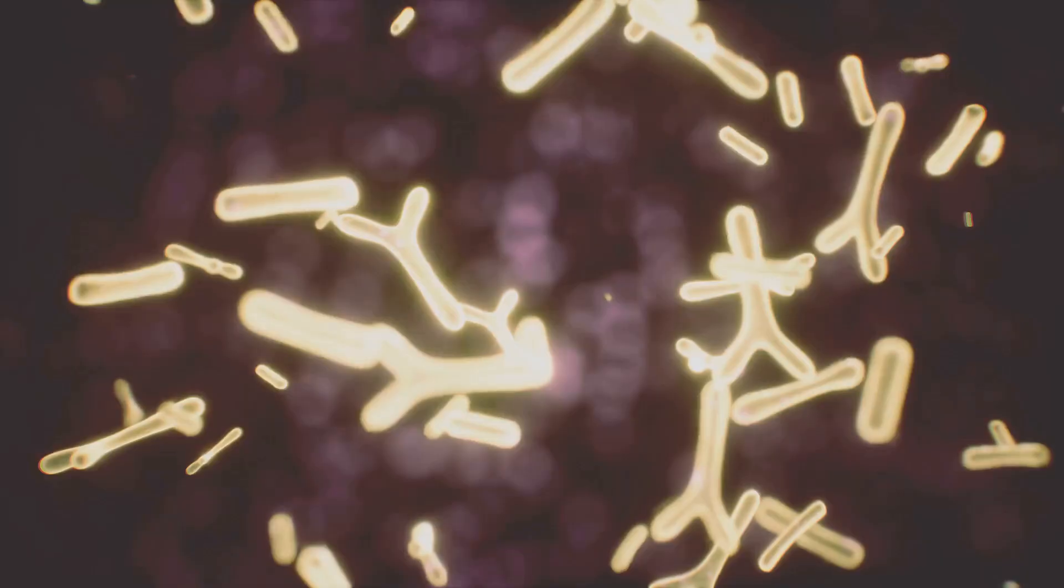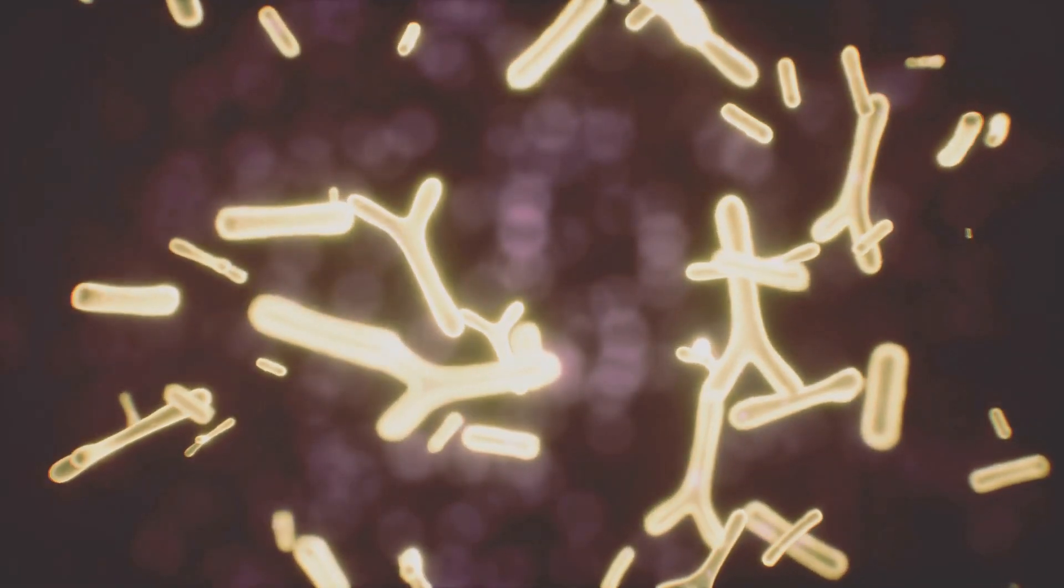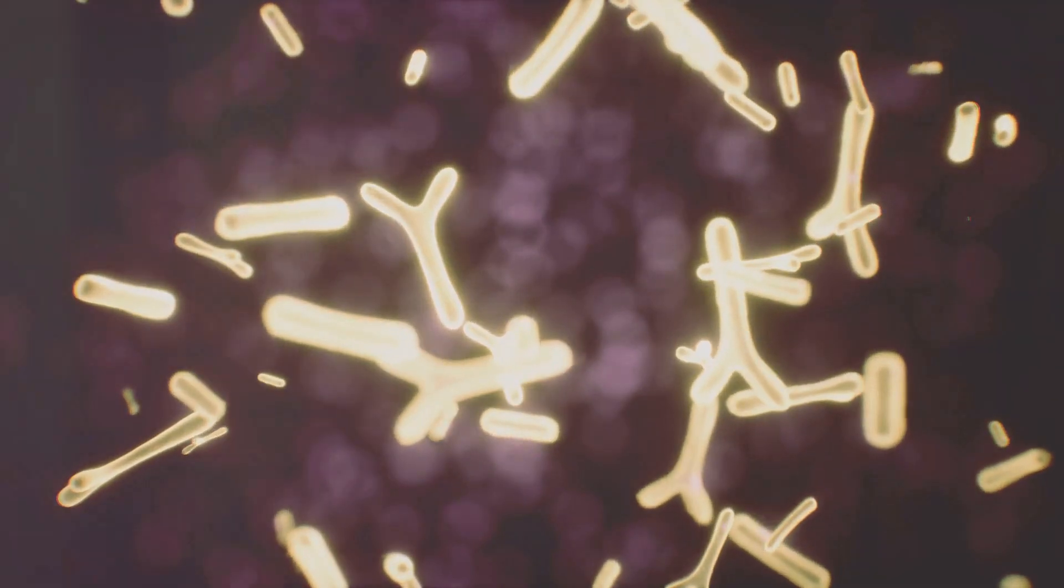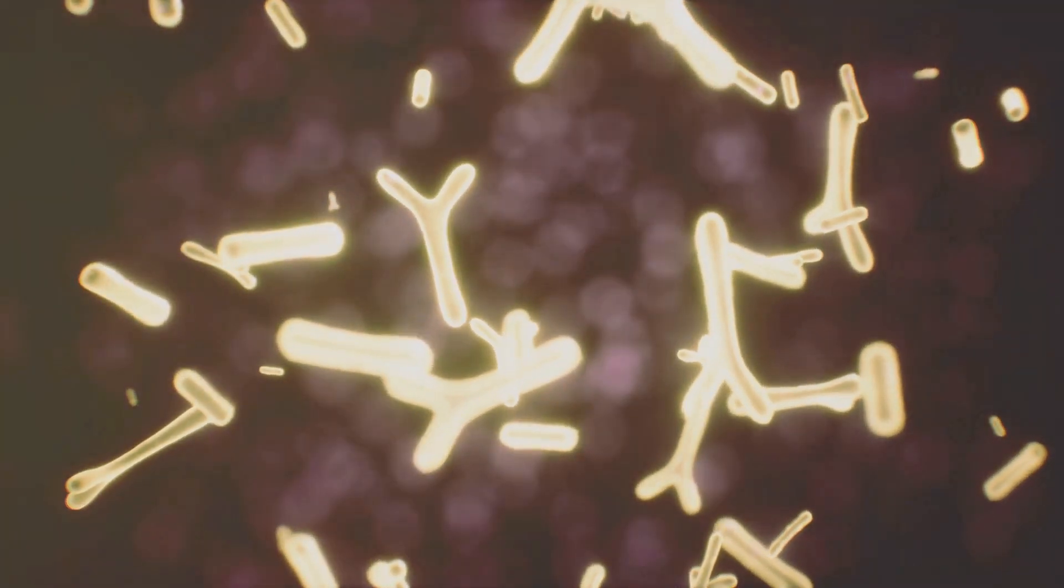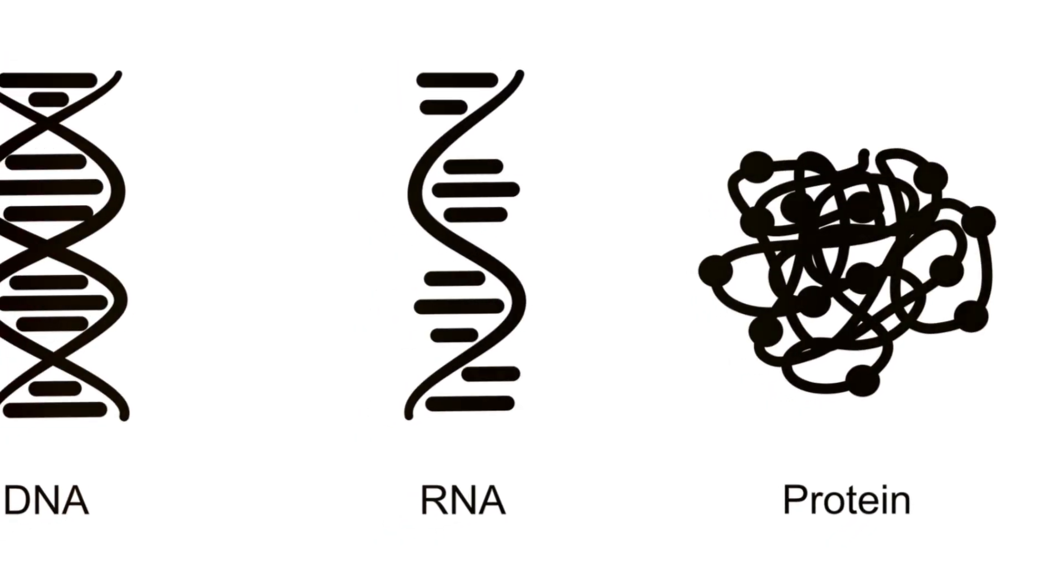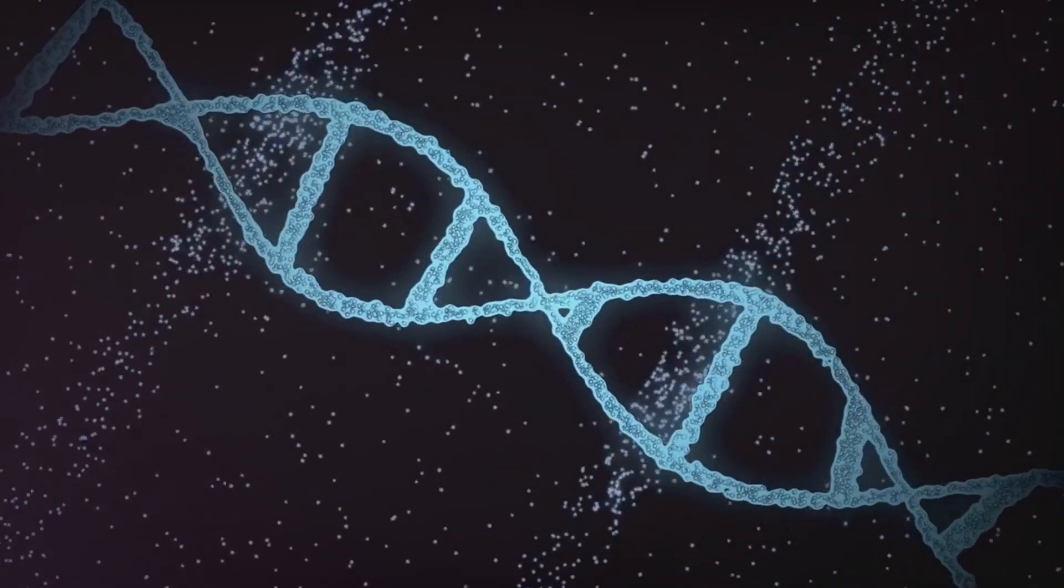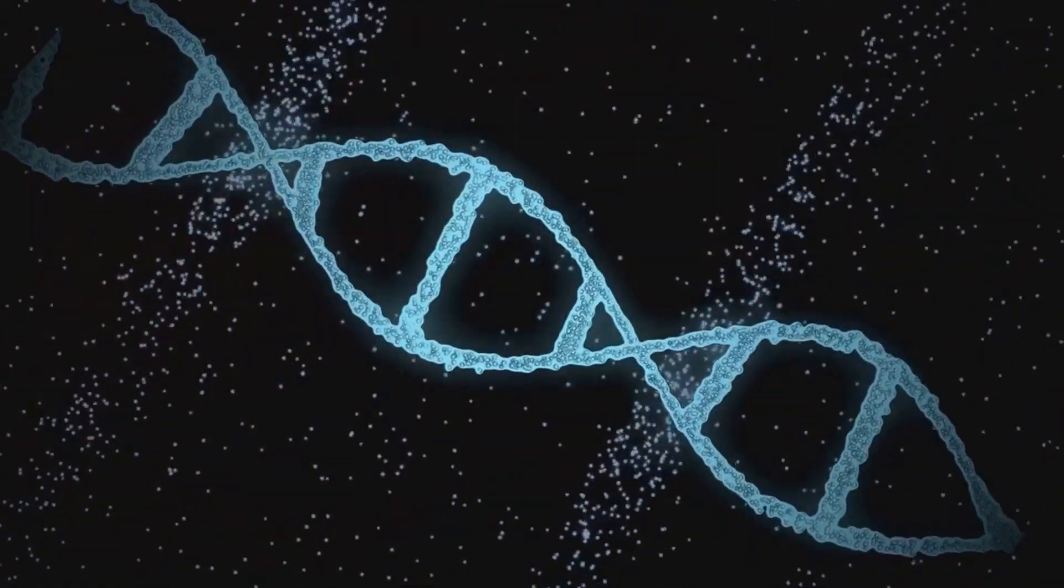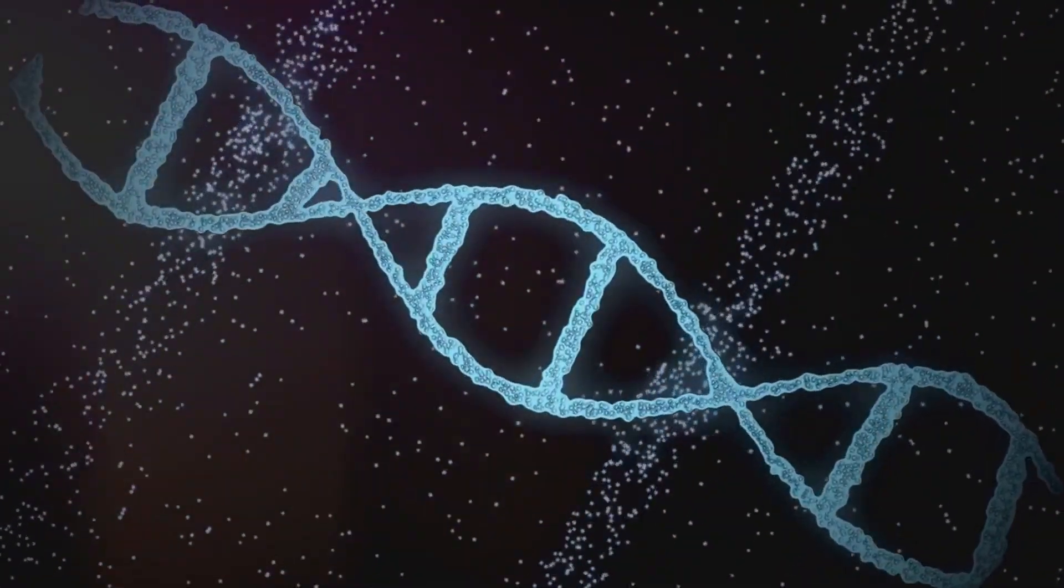And remember, this is in yeast, a relatively simple organism. Imagine the much higher complexity of the protein interactome in higher organisms with cells that have tens of thousands of proteins. This complexity, this intricate dance challenges the adequacy of Darwinian processes of random mutation and natural selection to explain protein-protein interactions.